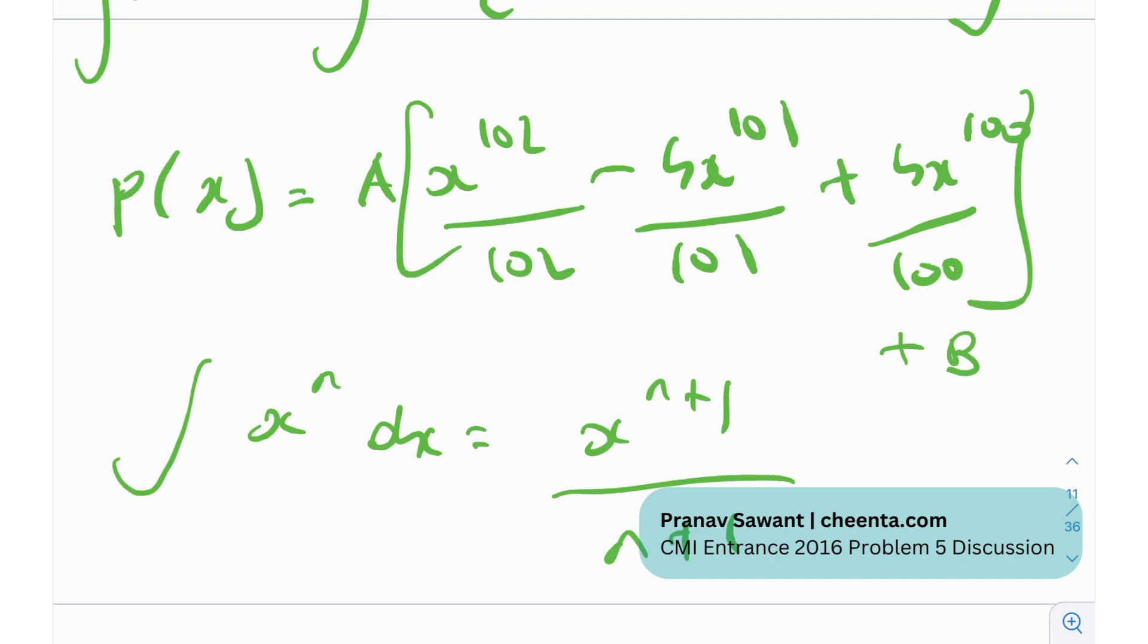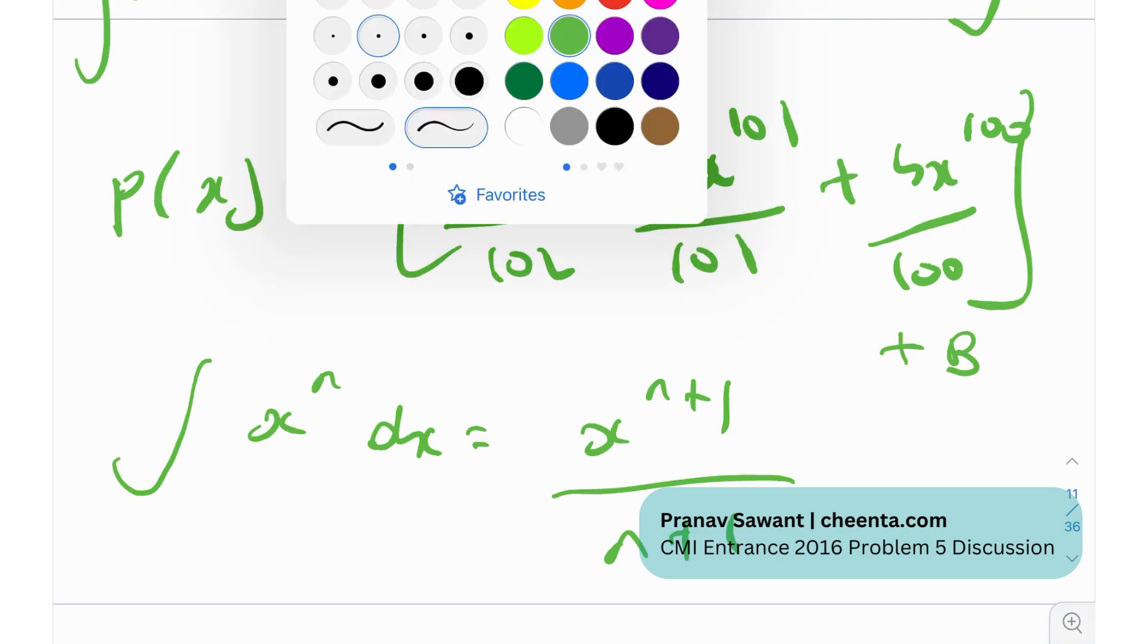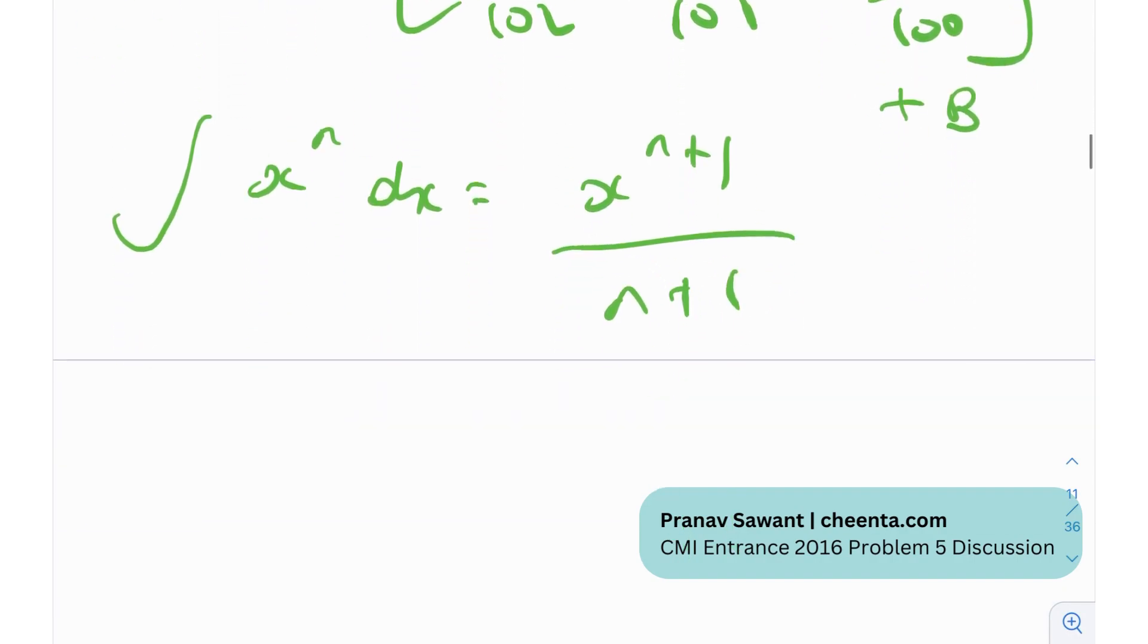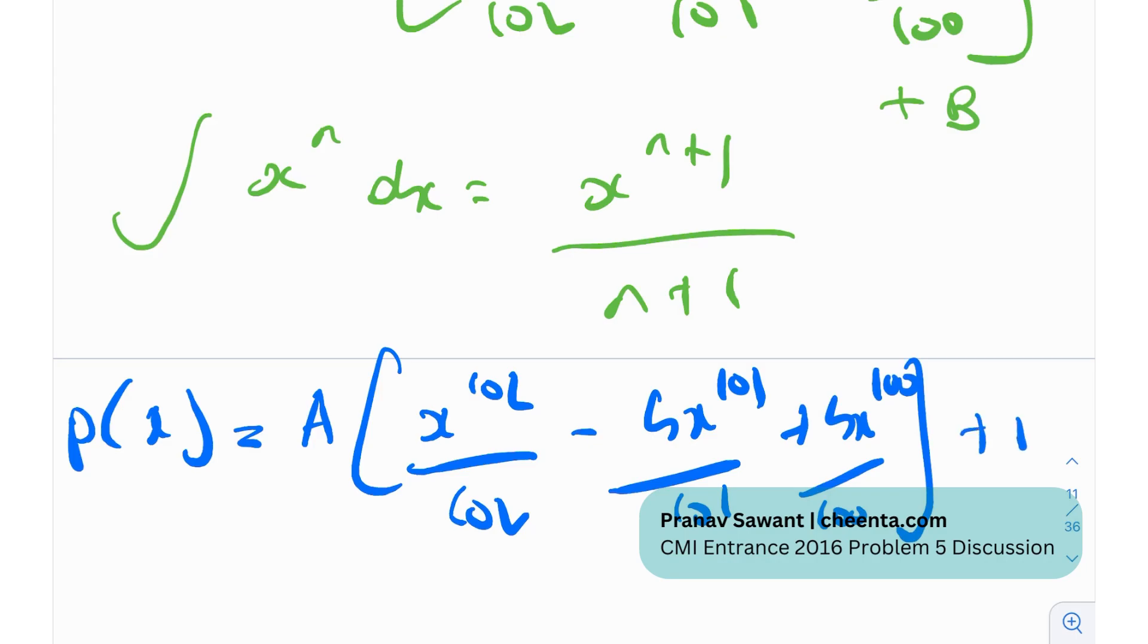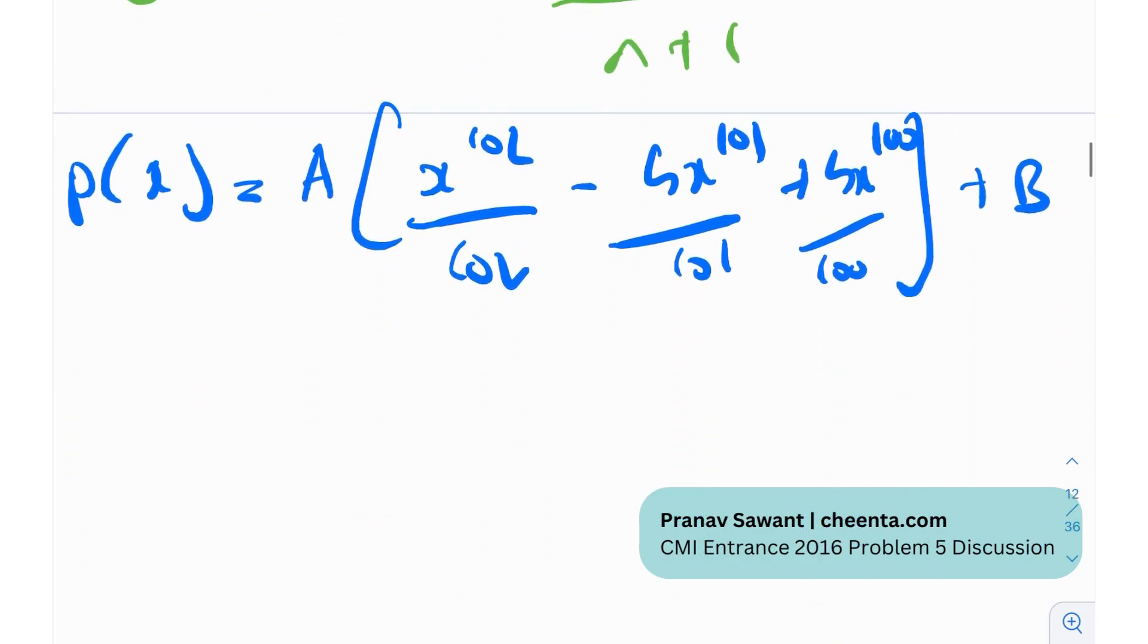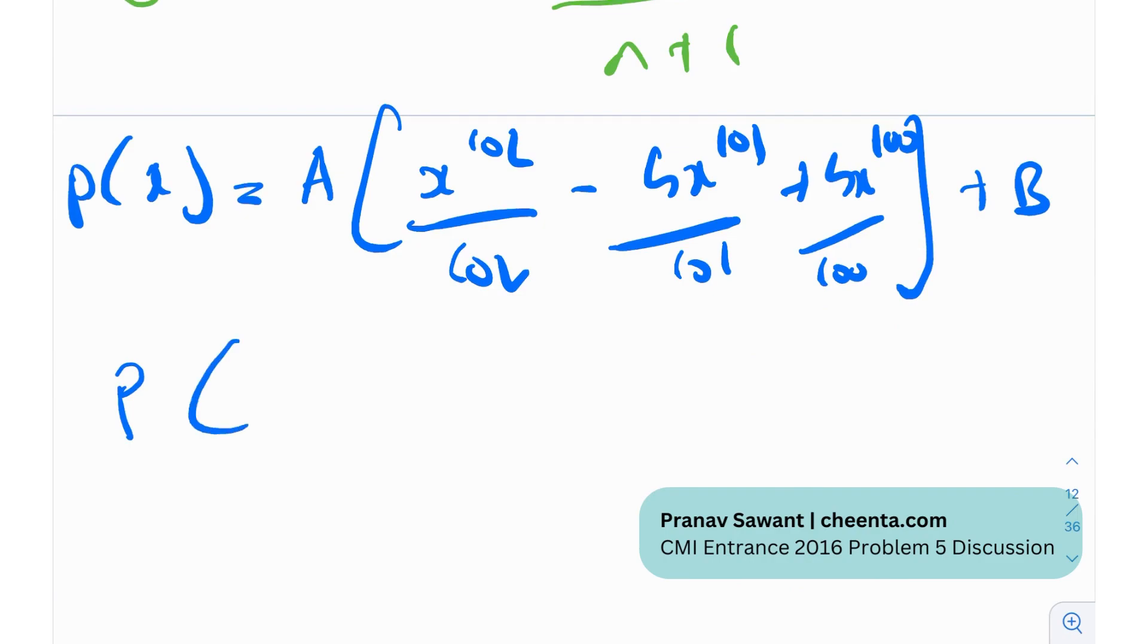So now we have an expression for p of x so p of x is nothing but a times x to the 102 by 102 minus 4 x to the 101 by 101 plus 4 x to the 100 by 100 plus b right that's essentially what we had found over here.